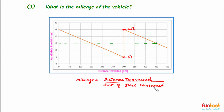Now let's find the mileage of the vehicle. The formula for mileage is distance traveled divided by amount of fuel consumed. From the graph, we take two points — point A and point B — and find the horizontal and vertical distances between them.